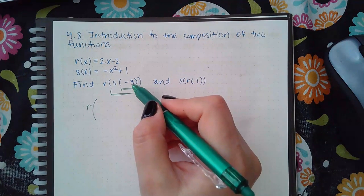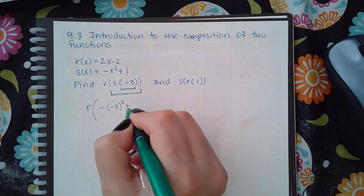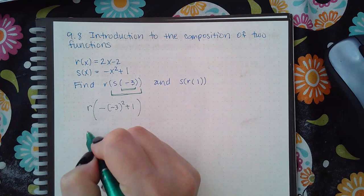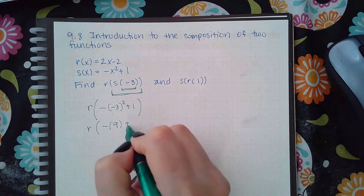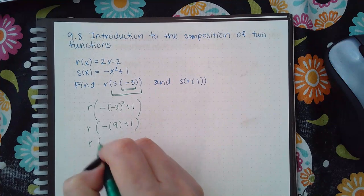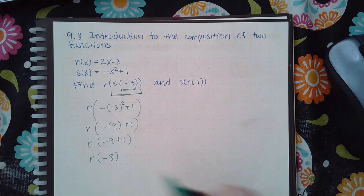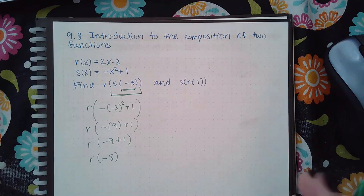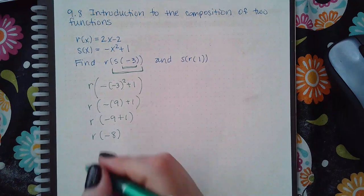It would look something like this, and if I simplify that, I have r(-8). And now that is telling me to plug in -8 into the r function, which means it will look like this.